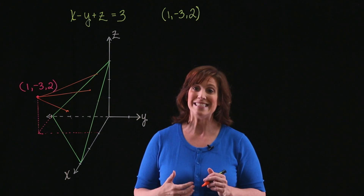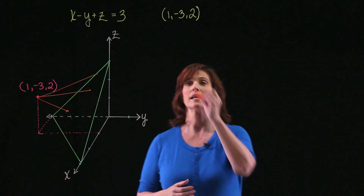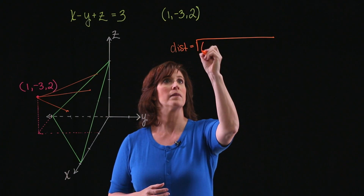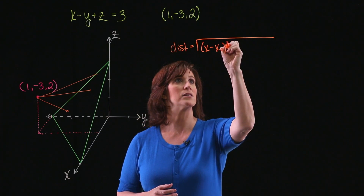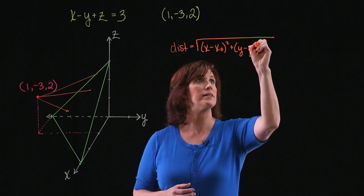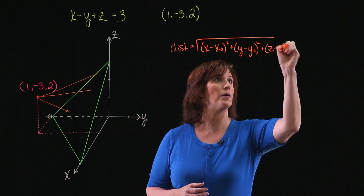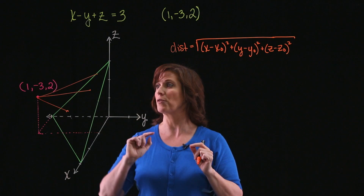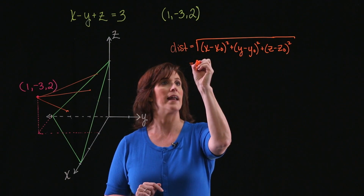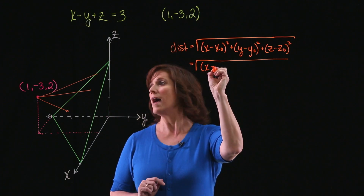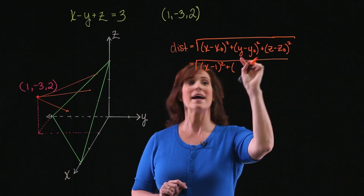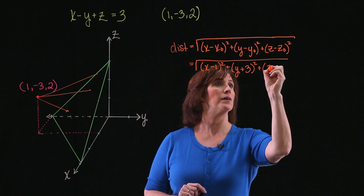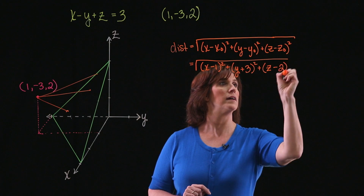So what I want to do is minimize distance. I need to come up with a formula for distance. The distance equals the square root of x minus x-sub-0 quantity squared, plus y minus y-sub-0 quantity squared, plus z minus z-sub-0 quantity squared. In this particular case, I know one of the points — the point 1, negative 3, 2 — so I'll plug that in. I have the square root of x minus 1 quantity squared, plus y plus 3 quantity squared, plus z minus 2 quantity squared.